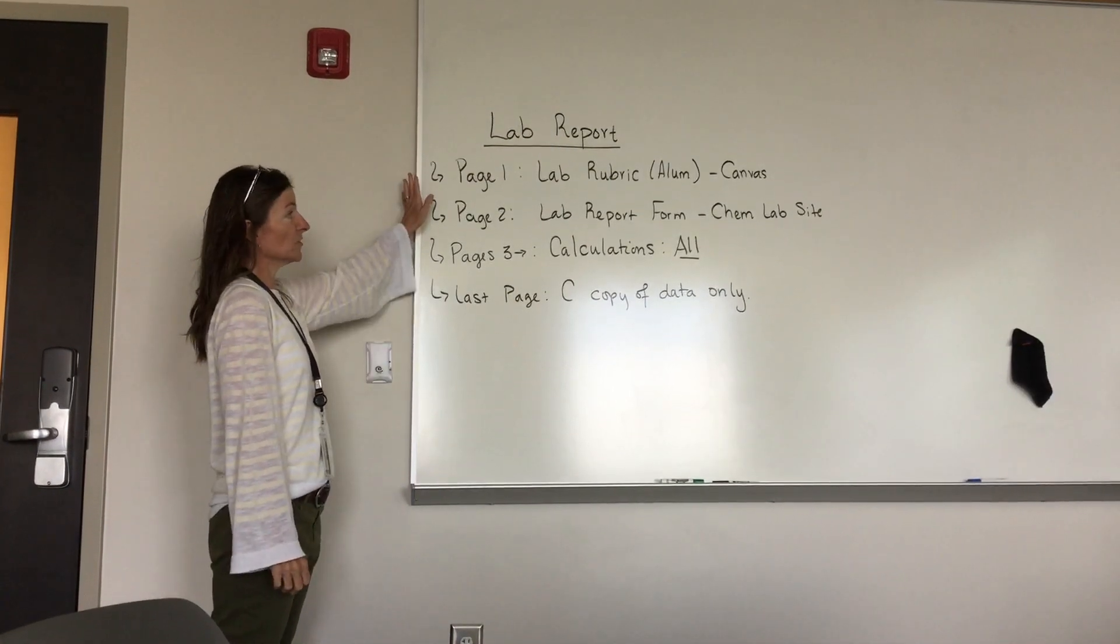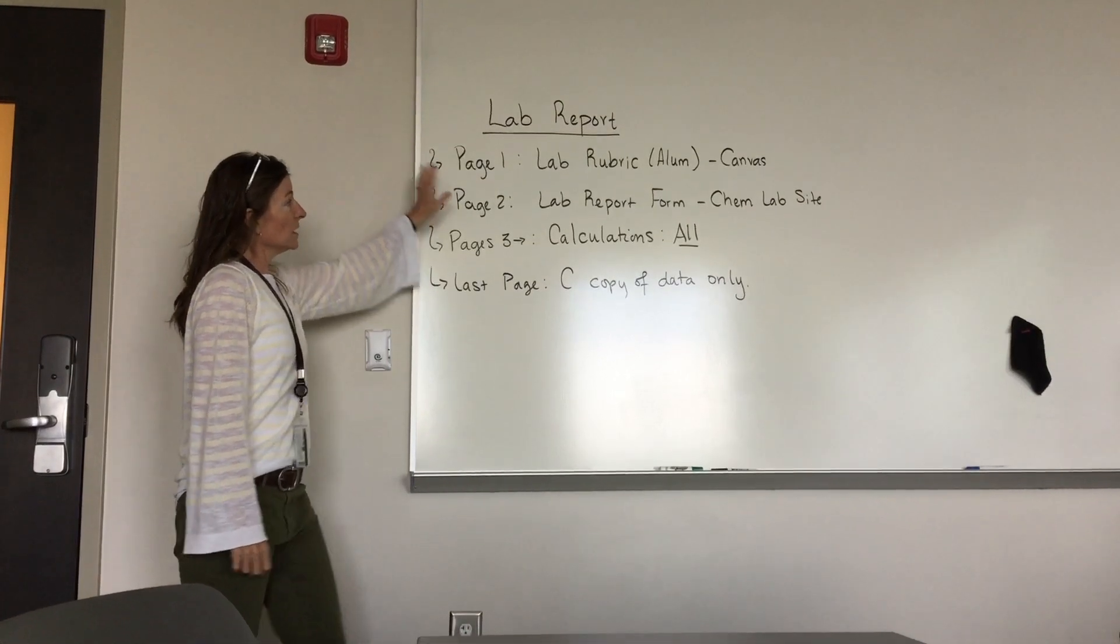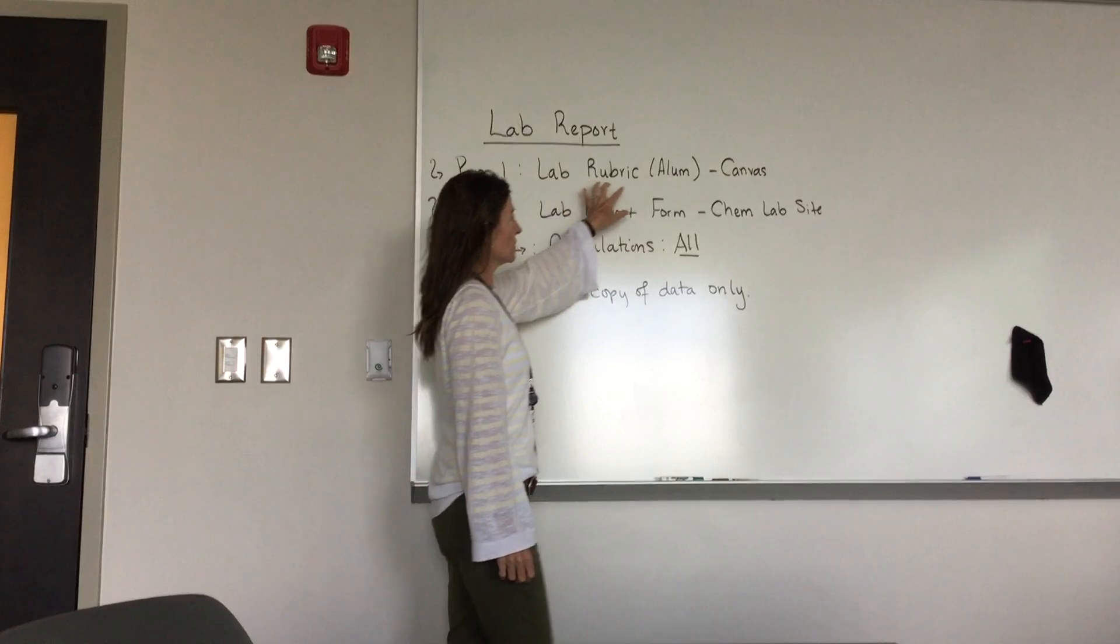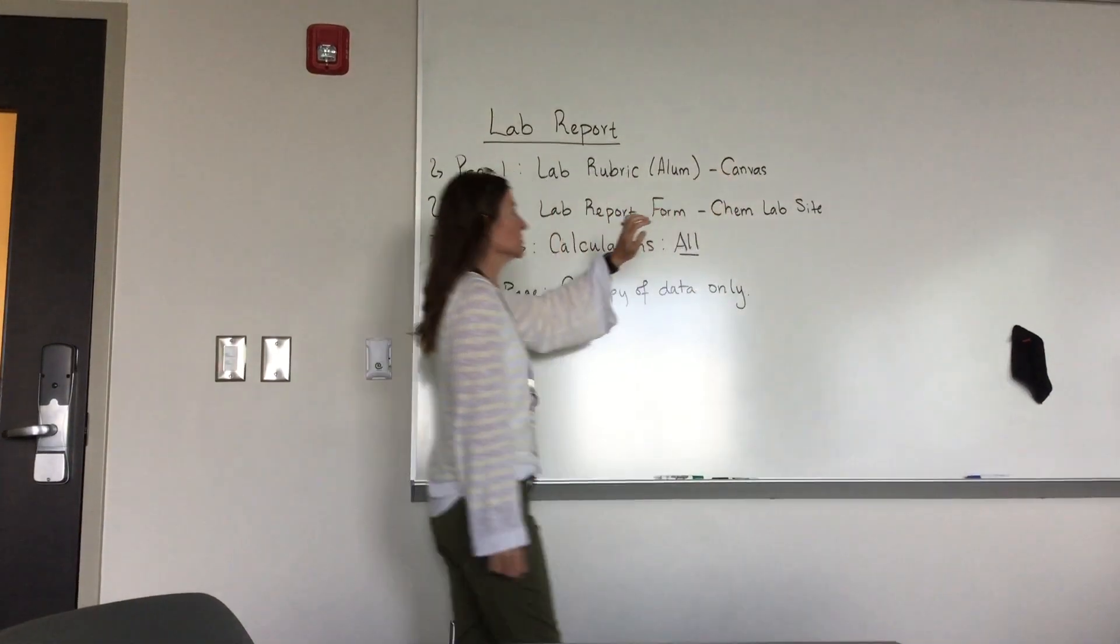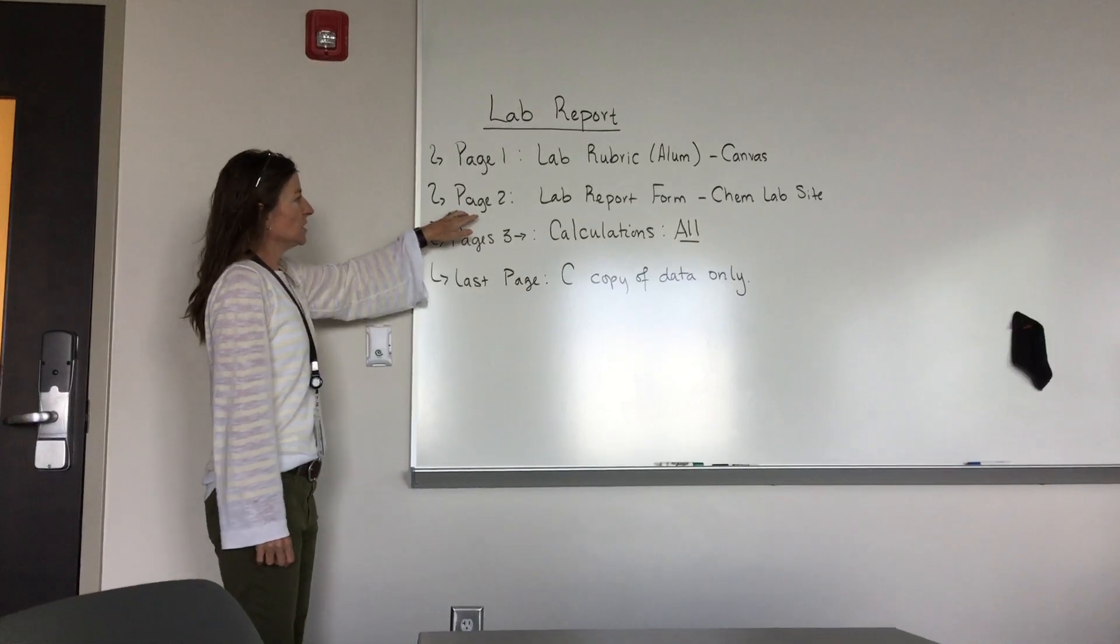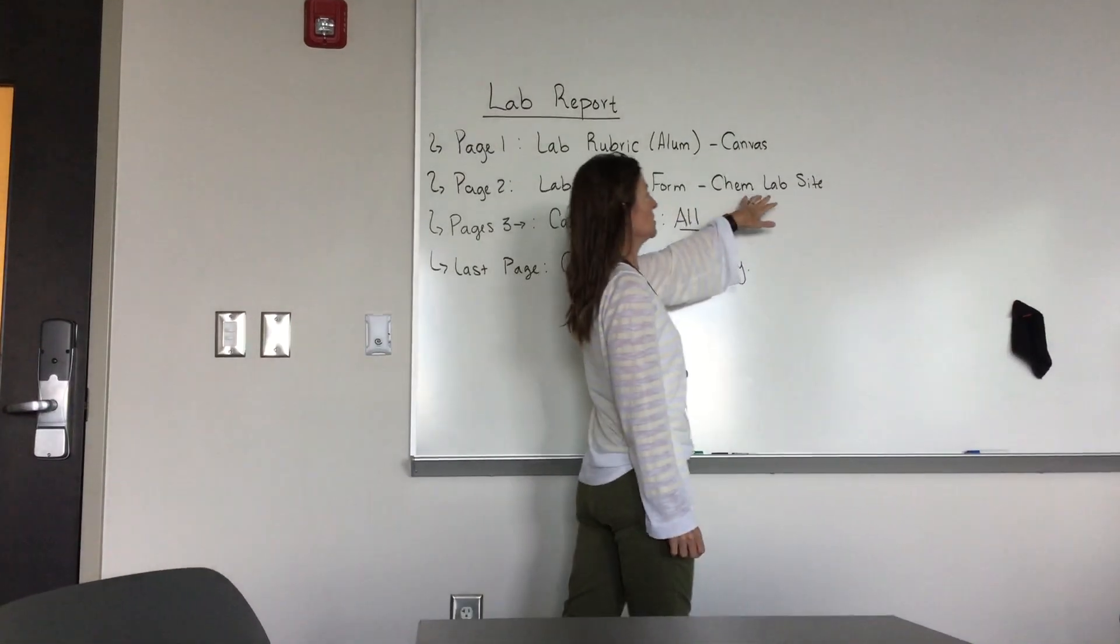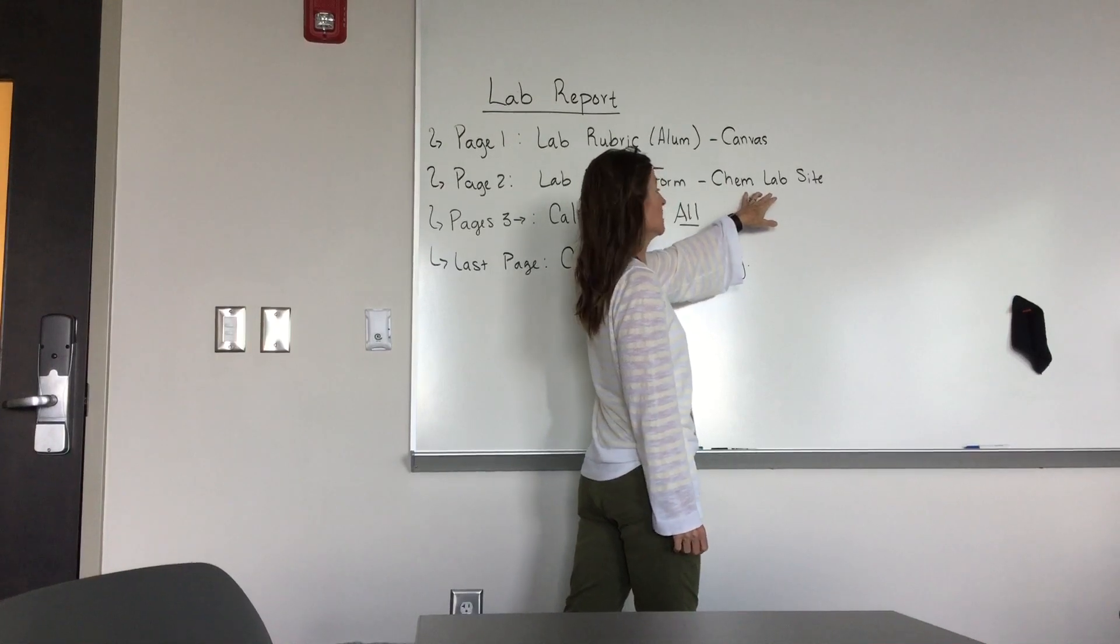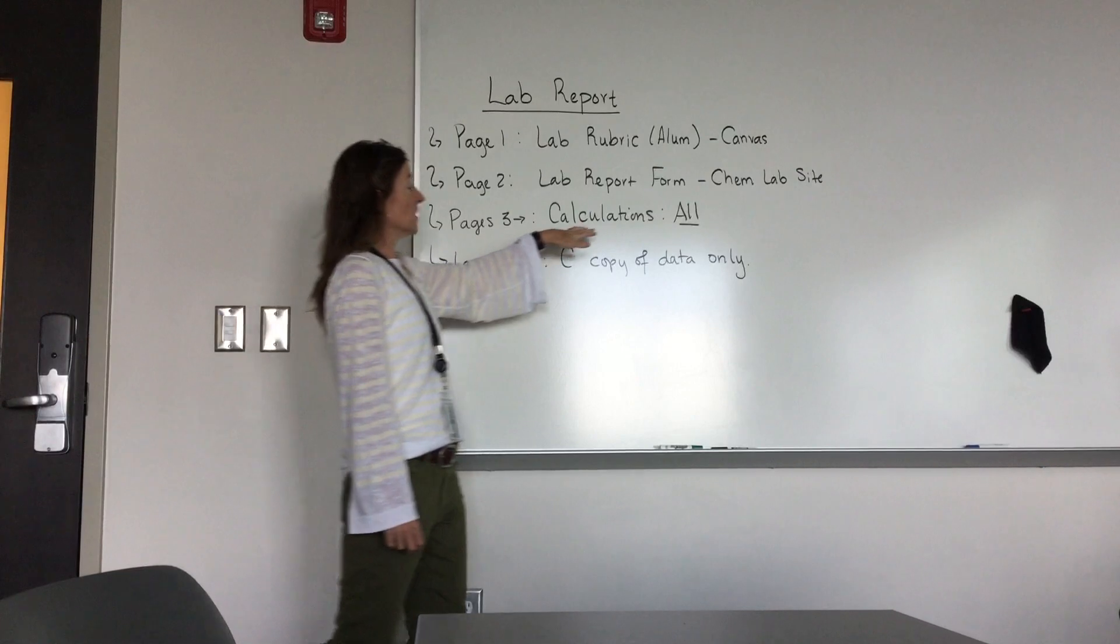All right, so this is your lab report for alum. For page one, I want the lab rubric for the alum lab report, which you can find on Canvas in the files. Page two is the lab report form, which can be found on the chemistry lab site where you found the procedure.